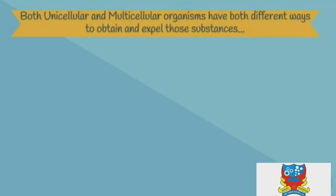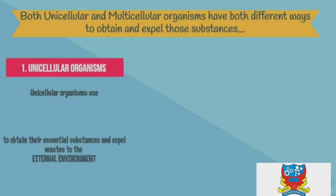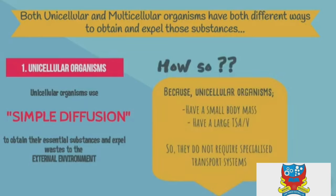Both unicellular and multicellular organisms have different ways to obtain and expel those substances. Unicellular organisms use simple diffusion to obtain essential substances and expel wastes to the external environment. This is because unicellular organisms have a small body mass and a large total surface area per volume ratio, so they do not require specialized transport systems.